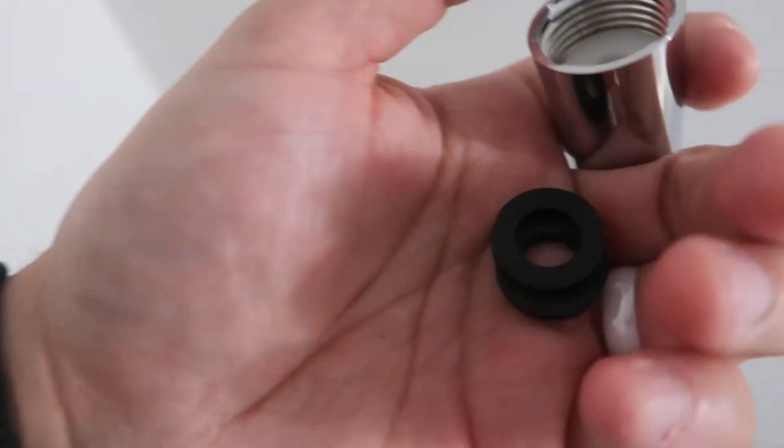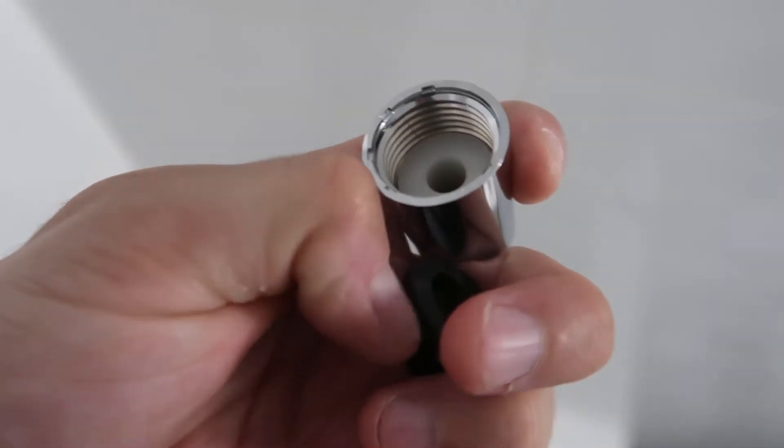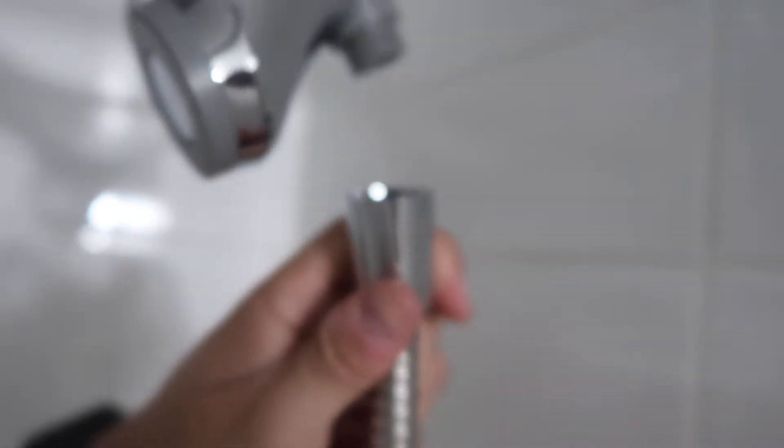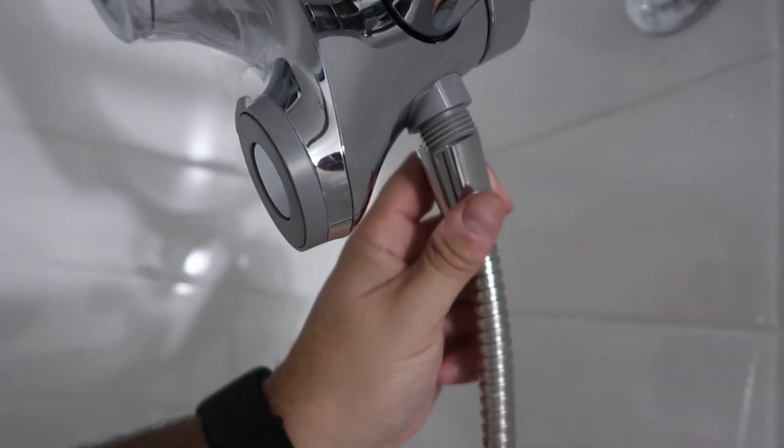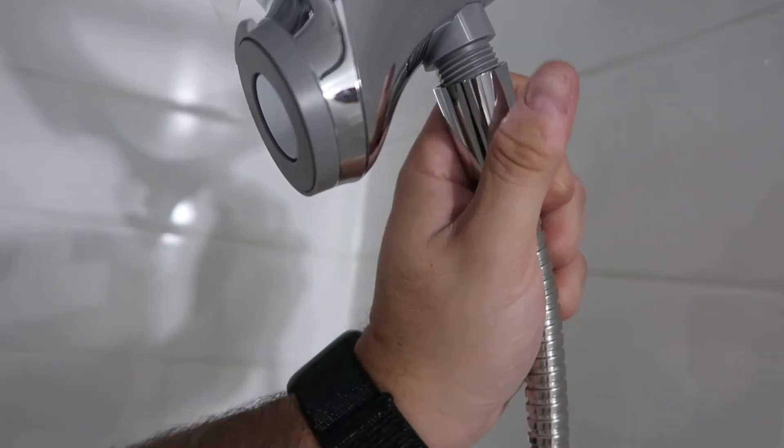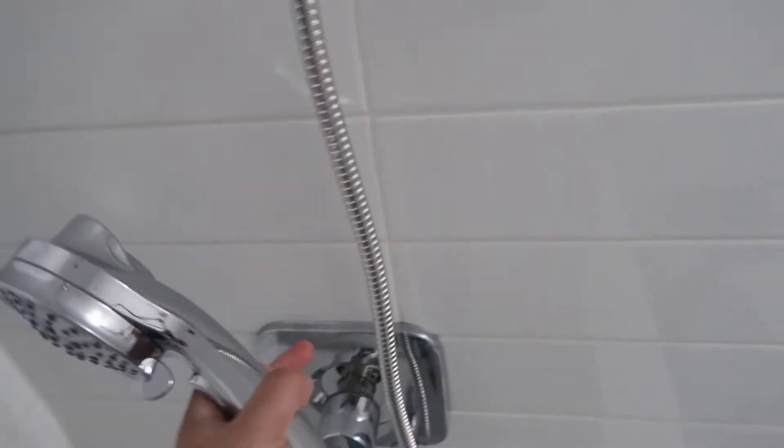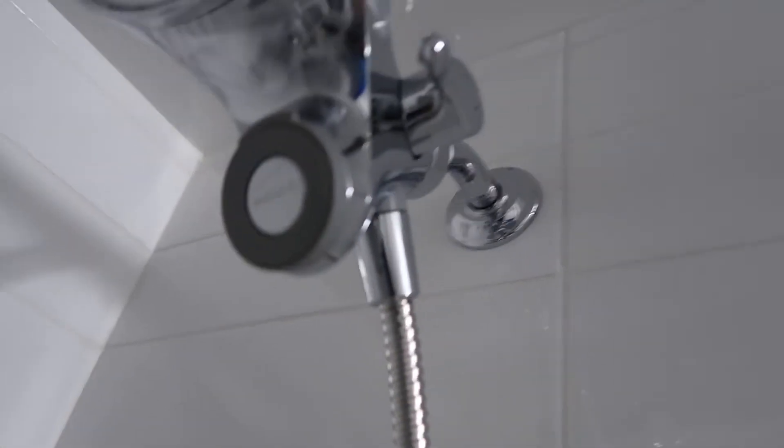It comes with two washers. You want to put one washer on the end, and then screw this onto the bottom here. Right to tight, left to loose. You want to do the same with this end of the nozzle.